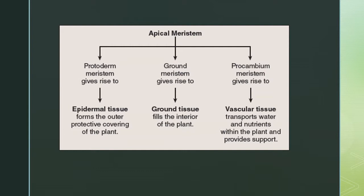Three apical meristems give rise to three primary tissues. The protoderm meristem gives rise to epidermal tissue — the protective outer covering of the plant. The ground meristem gives rise to ground tissue, which fills the interior bulk of the plant. The procambium meristem gives rise to vascular tissue — the primary xylem and phloem.